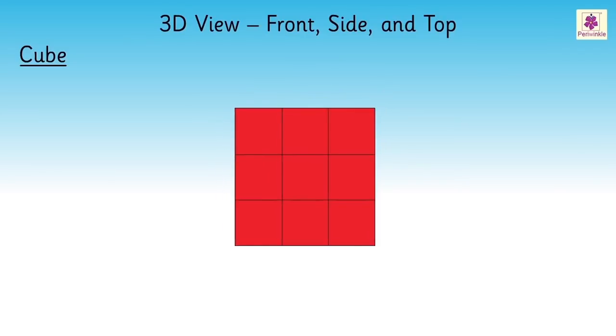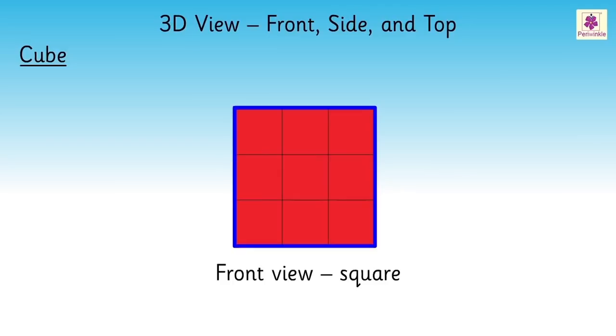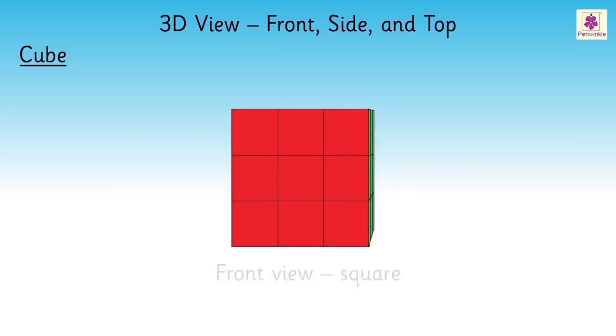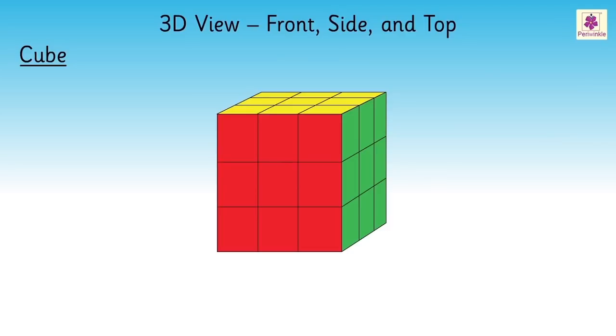The red colored face shows the front view which is a square. Now come back to the original position of the cube.